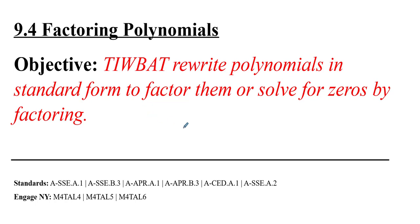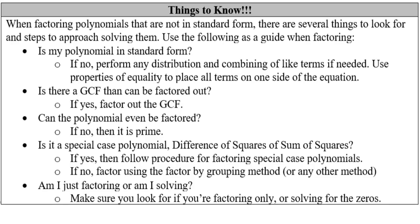So we are going to rewrite these in standard form and factor them or maybe solve them for their zeros. Some of the things that we should know when factoring polynomials that are not in standard form — we want to look for a couple things and use these steps to approach solving them. Use this as a guide when factoring. The first thing: is it in standard form? We always want to be in standard form. If it is not, you're going to see some problems like it.